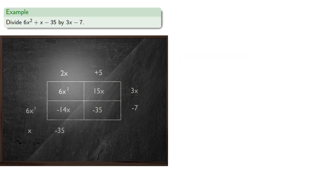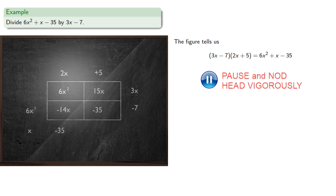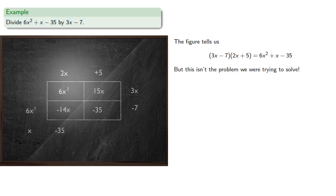Now the important thing here is figuring out what we found. The figure tells us several things. For example, it tells us that the product 3x minus 7 by 2x plus 5 is 6x squared plus x minus 35. And so that's not the problem we're trying to solve. Or is it?